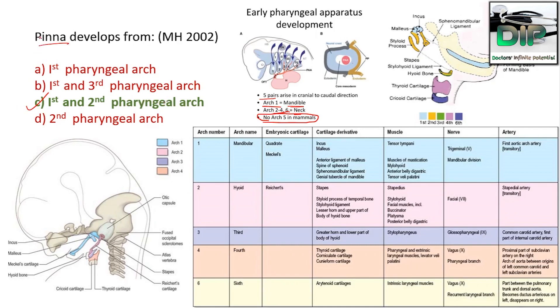We can remember it like this — 'I' is like one, and we have two N's in pinna. So pinna develops from first and second pharyngeal arc.